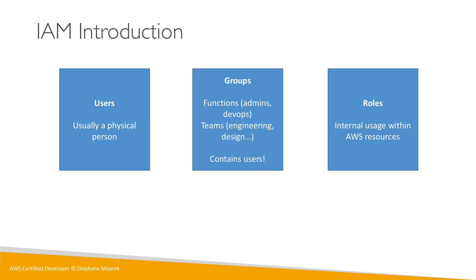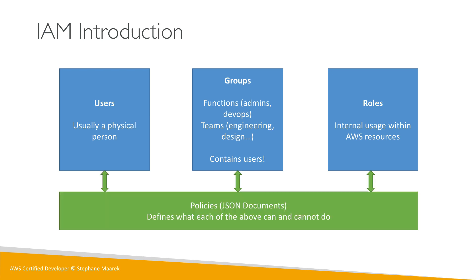Roles are only for internal usage within AWS resources and services — roles are what we give to machines. This is a strong distinction: users are for physical persons and roles are for machines. Policies are JSON documents that define what each of these building blocks — users, groups, and roles — can and cannot do.